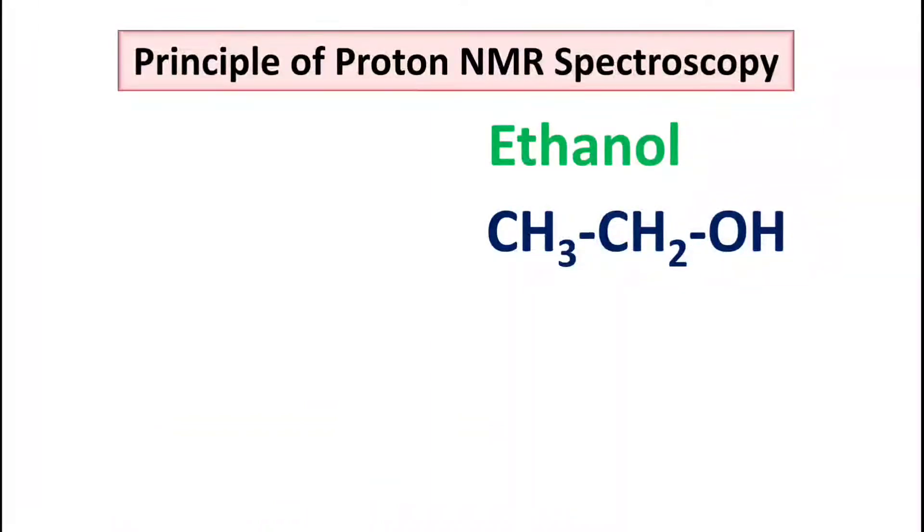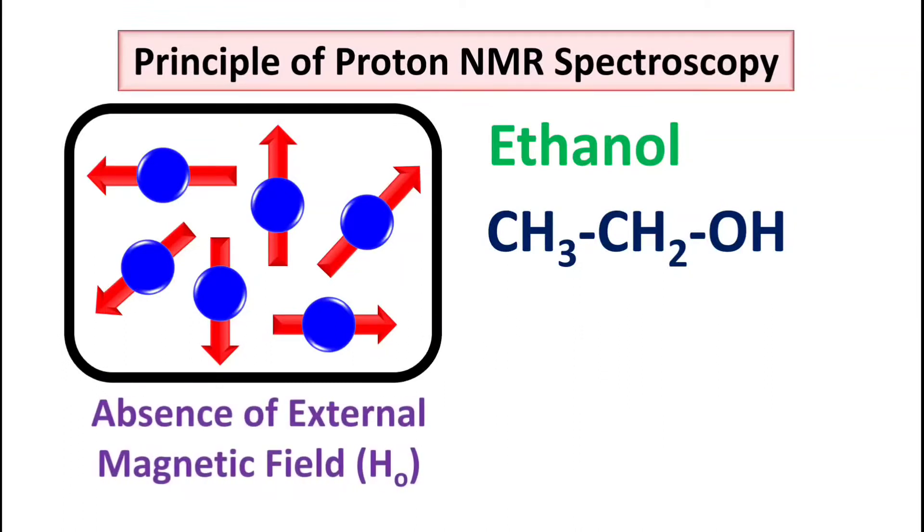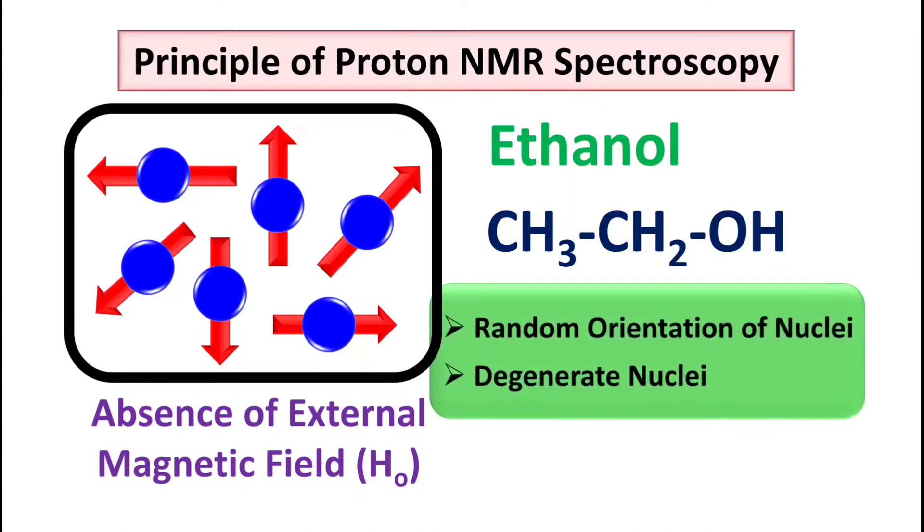Let's consider the ethanol molecule. As you can see there are six hydrogen nuclei present in the ethanol molecule. But when there is no external field, these all six hydrogen nuclei get oriented in random motion. And because of that they are having same energy, that is they are degenerate nuclei.